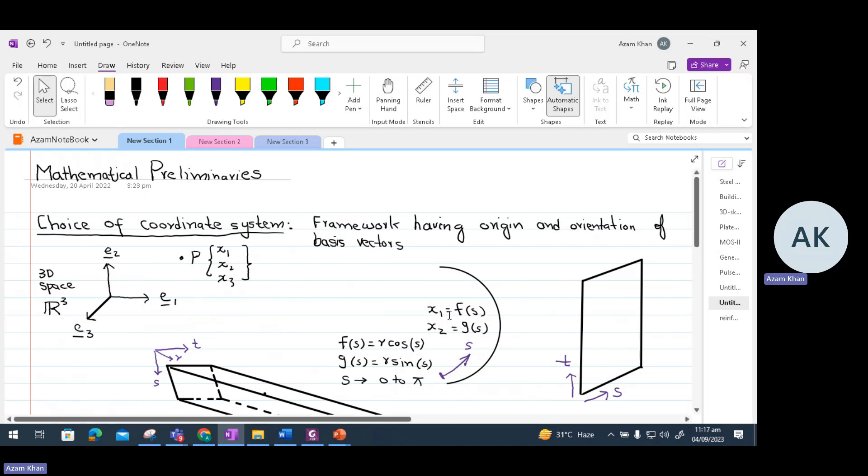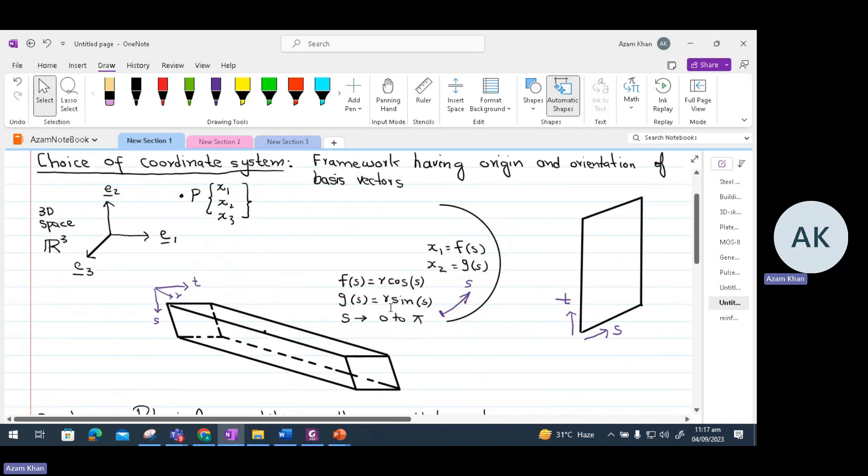X1, which is defined as a function of S, and X2, which is also defined as a function of S, can be written as R cos S and R sine S. R is the radius of a circle in this case, and S is a parameter. S is actually the inclination that ranges from 0 to pi. In the case of 2D structures, we can define two parameters, which are S and T. And by means of these two parameters, we can define the whole area.